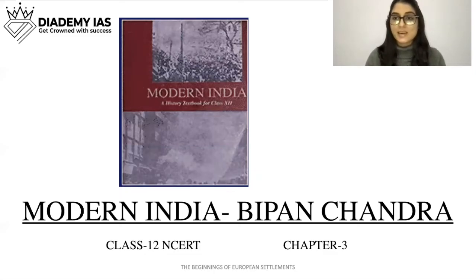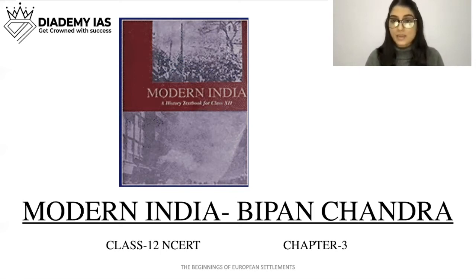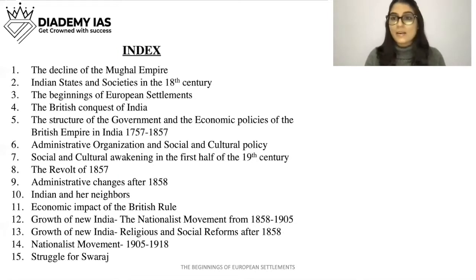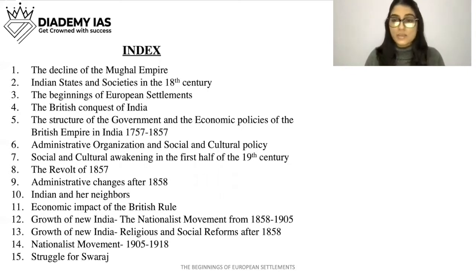Hello everyone. This class is presented to you by Diadmi IES. In this class, we will be covering Chapter 3 of Class 12 NCERT Modern India by Bipin Chandra. We have already covered Chapter 1, The Decline of the Mughal Empire, and Chapter 2, Indian States and Societies in the 18th Century. Today we will be starting with Chapter 3, The Beginnings of European Settlements.